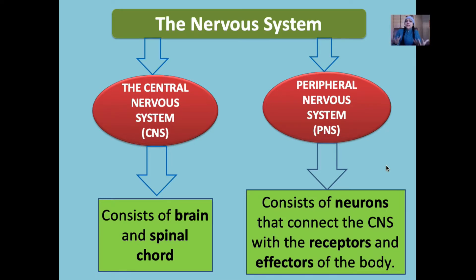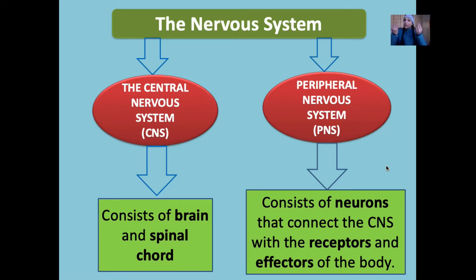What does this nervous system consist of? Our nervous system consists of millions and millions of neurons, or nerve cells. These nerve cells inside our nervous system are there carrying nerve impulses to and from our CNS. The central nervous system and the peripheral nervous system are the two parts that the nervous system can be divided into.